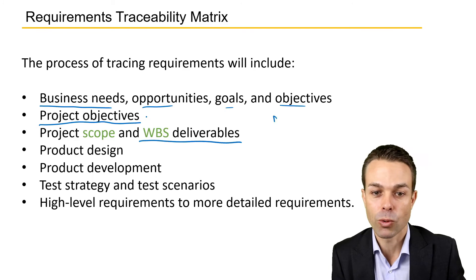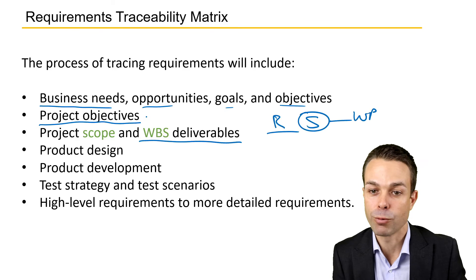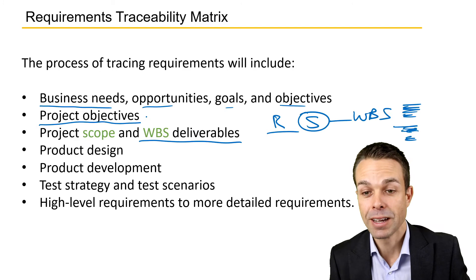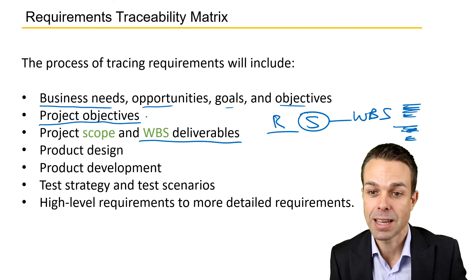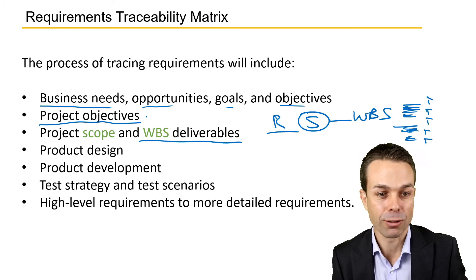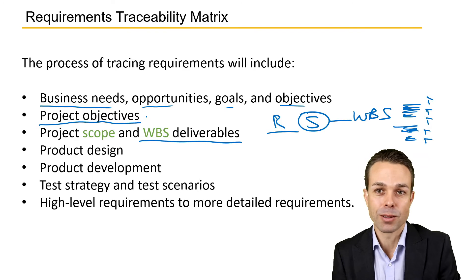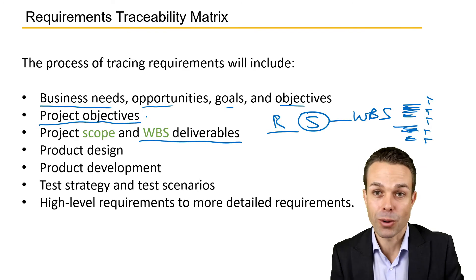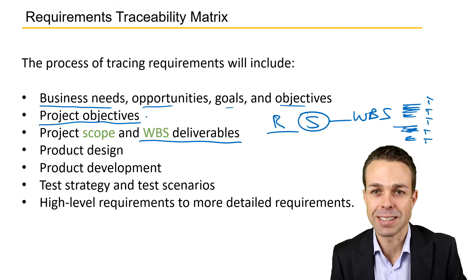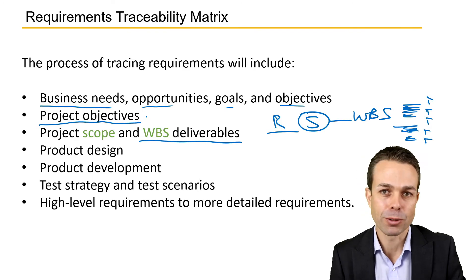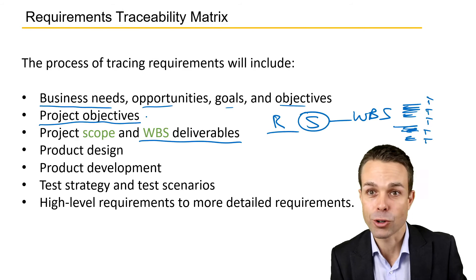We also include the project objectives, the project scope and Work Breakdown Structure deliverables. So we've got our requirements, we've turned those into the project scope, and then we've broken it down further into the actual small deliverables that our teams — each individual team — will be working on themselves, making it nice and easy for people to work on in small increments.